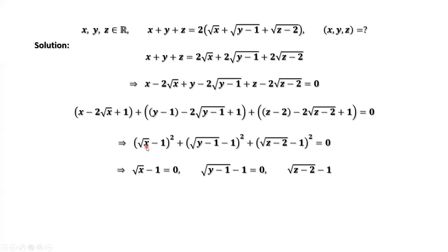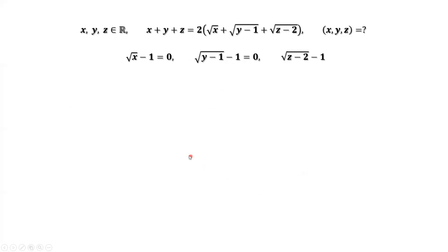Therefore, square root of x minus 1 equals zero. Square root of y minus 1, then minus 1 equals zero. Square root of z minus 2 minus 1 equals zero. Therefore, square root of x equals 1, square root of y minus 1 equals 1, square root of z minus 2 equals 1.